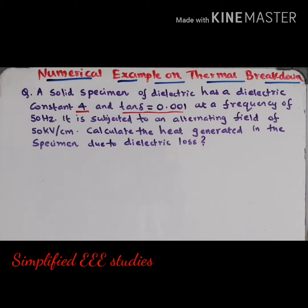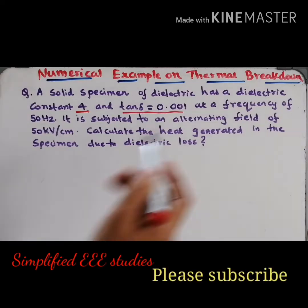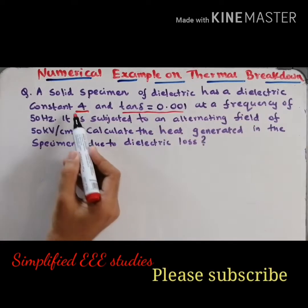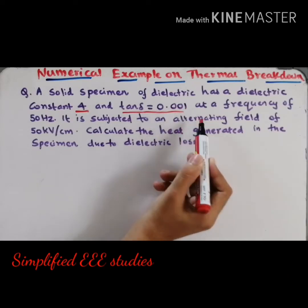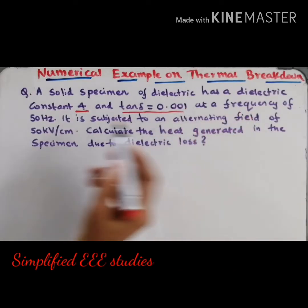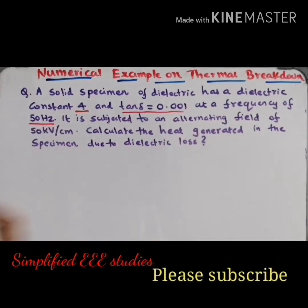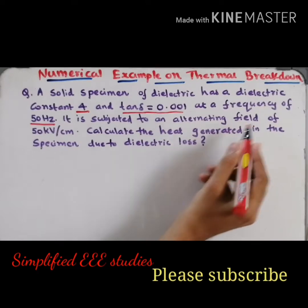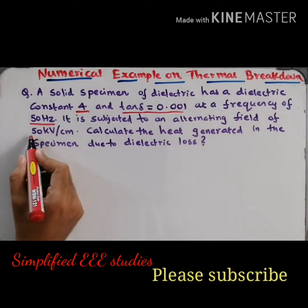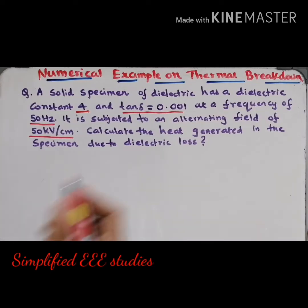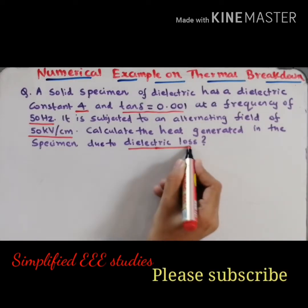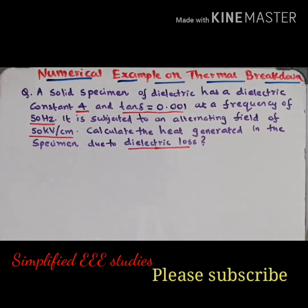Please read the question first. A solid specimen of dielectric has a dielectric constant of 4 and tan delta equal to 0.001 at a frequency of 50 Hz. It is subjected to an alternating field of 50 kV per centimeter. Calculate the heat generated in the specimen due to dielectric loss.